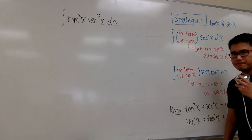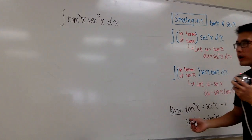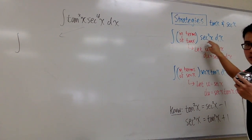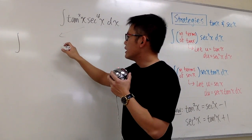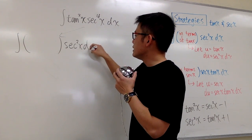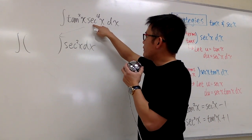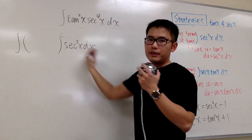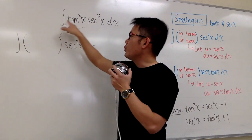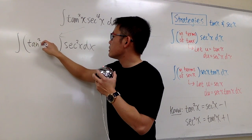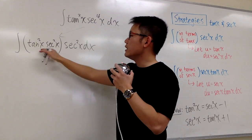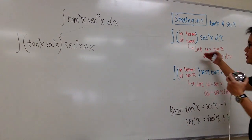Which strategy can we make happen? For Strategy 1, I want to break this integral so that we have secant squared x dx on the side. Since we have secant to the fourth power, I take two of them out and put them on the side, leaving tangent squared x times secant squared x inside the first part.